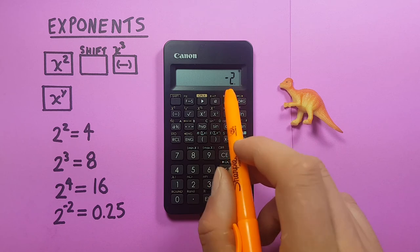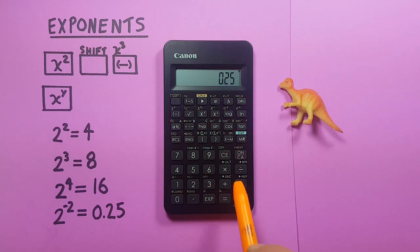This is our exponent, negative 2, and then press equals, and we get 0.25, which is correct.